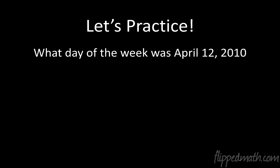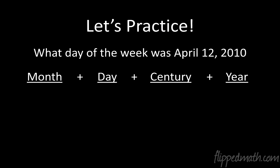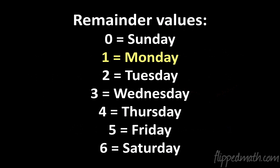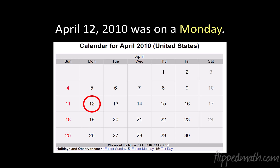Let's practice. What day of the week was April 12, 2010? Take the month: April is 6. The day: 12. Century and year combined: 4. Add those together and you get 22. Divide by 7 — we only care about the remainder. 7 goes into 22 three times, but we don't care about the 3 — we care that the remainder is 1. Remainder of 1 is a Monday. And there's the calendar for proof: April 12, 2010 was indeed a Monday.